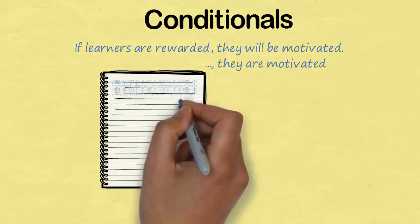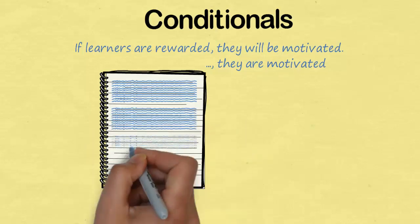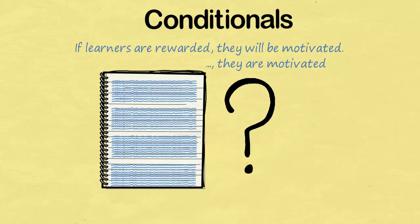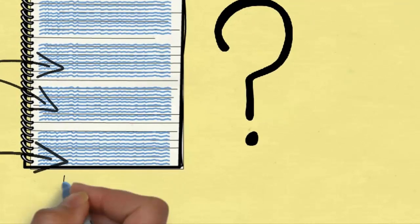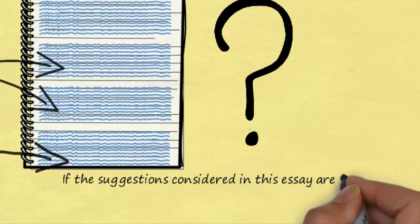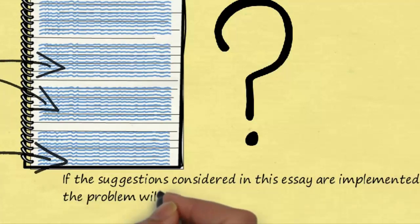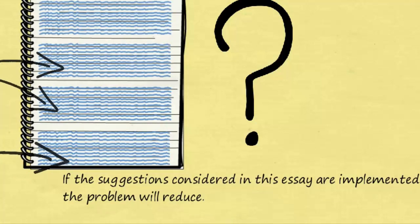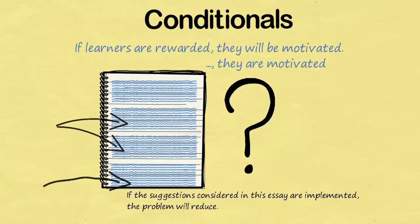Where are we going to put these cause-effect sentences in our essay? We can put them in the explanation of our main point in the body of the paragraph. We can also, especially with the conditional sentence, put it at the end of the essay — it's a really good finishing sentence. For example, if the essay asks you to discuss a problem and you've given suggestions, you could say 'If the suggestions considered in this essay are implemented, the problem will reduce.' It's an excellent sentence to use right at the end of your essay.